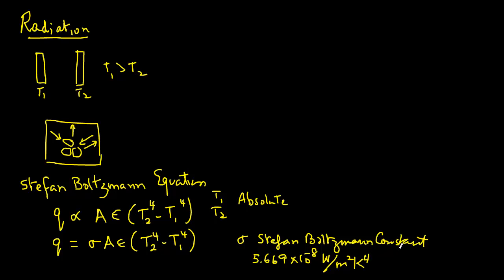Area A is in square meters. Now epsilon is the emissivity, a radiative property of the surface. It does not have any units. T1 is the temperature of one surface in absolute and it will be in Kelvin, and similarly T2 is the temperature of the other surface, again in absolute, and this will also be in Kelvin.